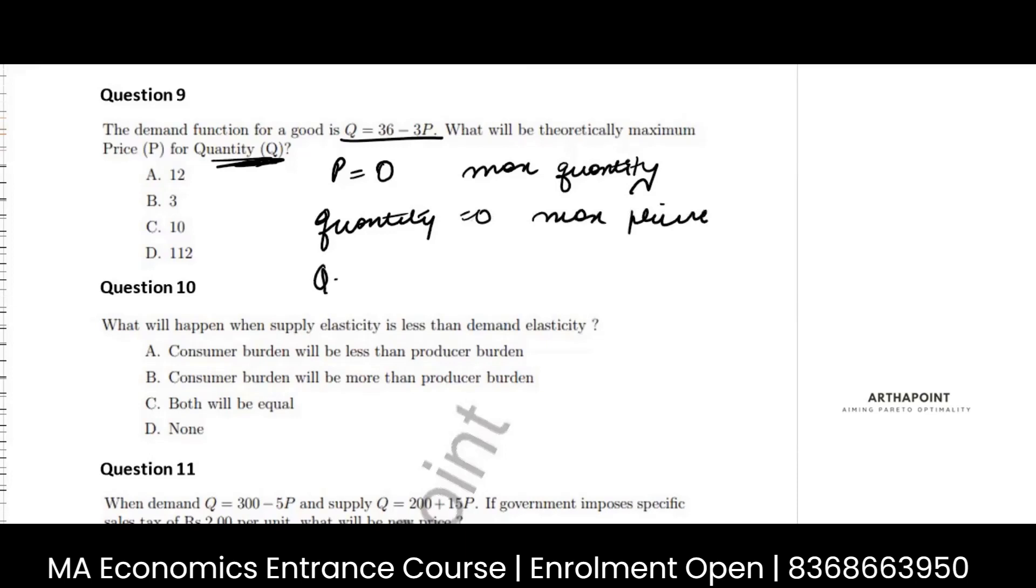So, if you put Q as 0, your P will be 36 by 3, which is 12. So, this will be your answer.